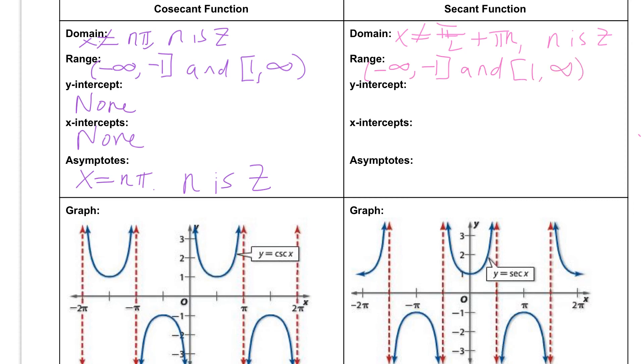If we take a look at our y intercept, we do have a y intercept for this graph. Right here we have the point zero one, so we would say our y intercept is the point zero comma one. But similar to the cosecant function, there are no x intercepts as we never go between negative one and positive one.